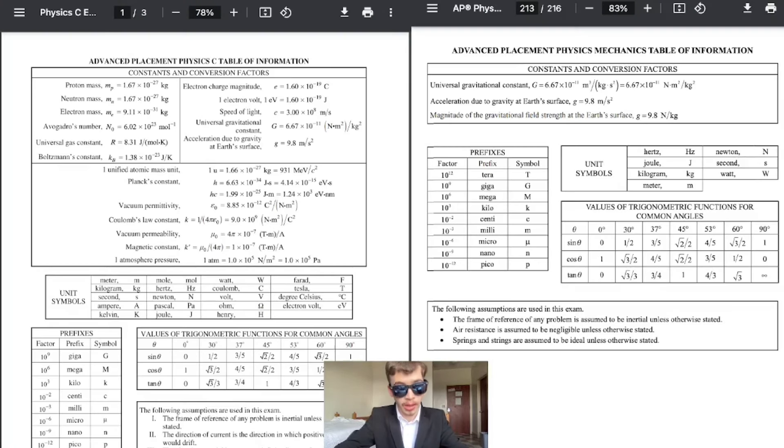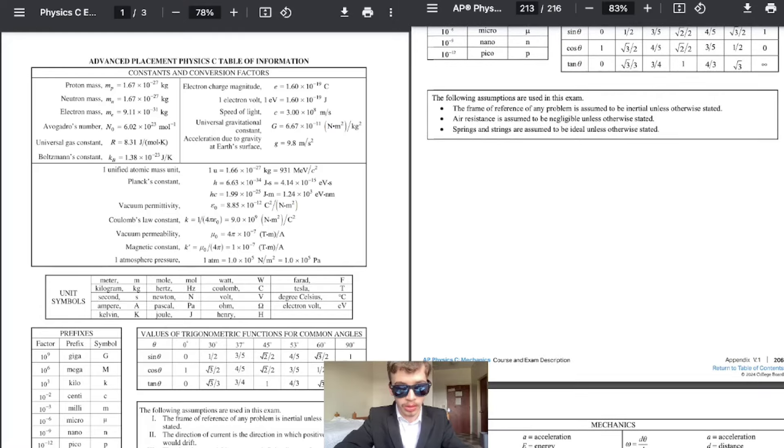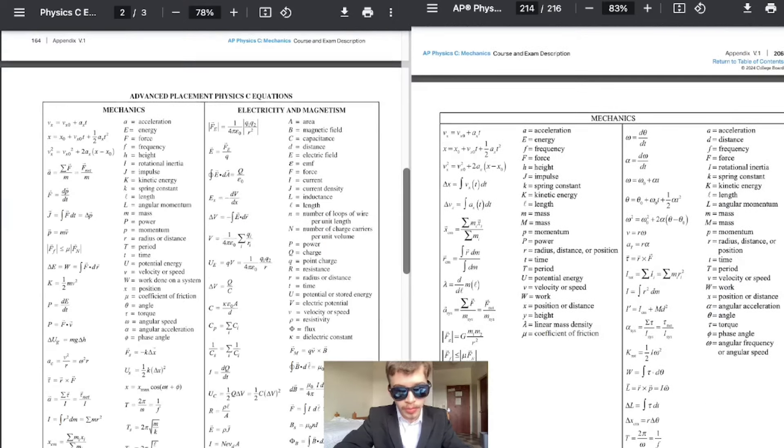Alrighty now on to AP physics c mechanics. The old formula sheets on the left new ones on the right. You can see only three constants. So I believe what they did and AP physics students, former AP physics c students could correct me, is they split up the AP physics c formula sheet because of the two different courses. Because on this on the old one they have mechanics and electricity and magnetism both unless I'm looking at the wrong old formula sheet but I feel like this is what it looked like for both AP exams.